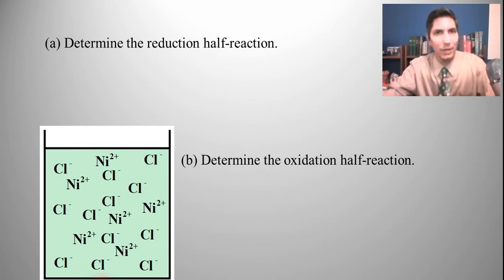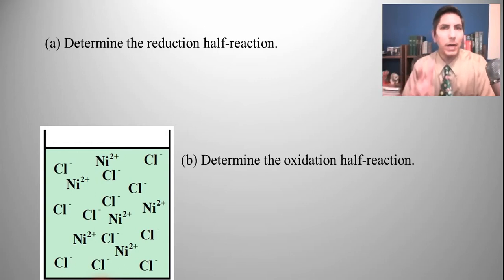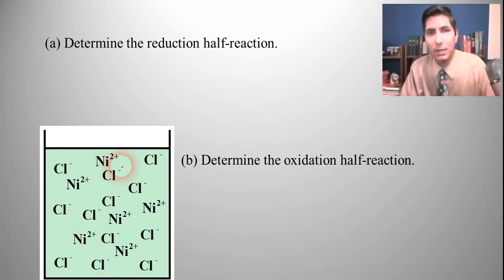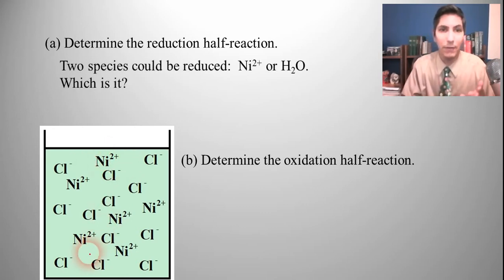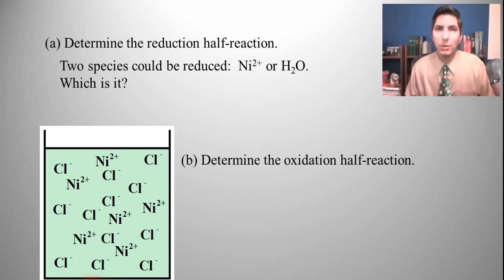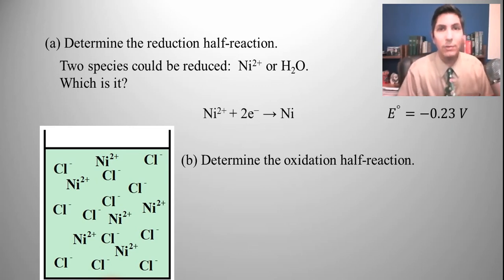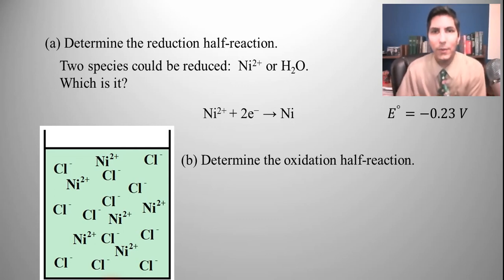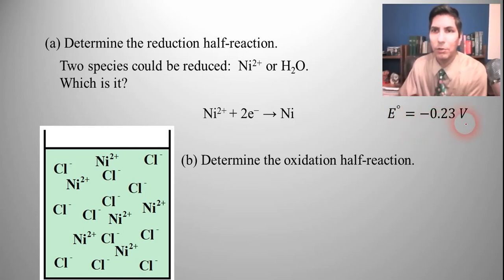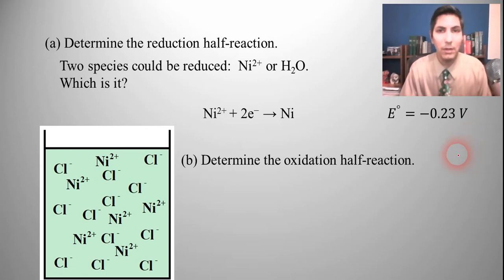Let's determine the reduction half-reaction. We want to consider that there are two possible things that could be reduced. Positive metallic ions generally tend to be reduced, so we could have that. But it could also be the water because that's present in this mixture as well. The half-reaction for the reduction of nickel ions into plain nickel metal has a reduction potential of negative 0.23 volts — right out of the list of reduction half-reactions you can look up online or in your textbook.